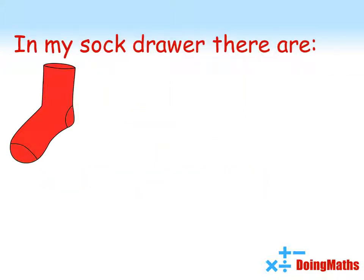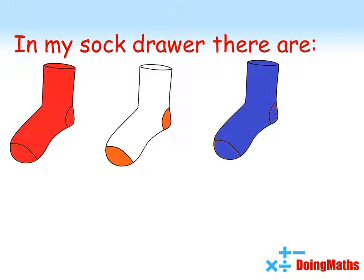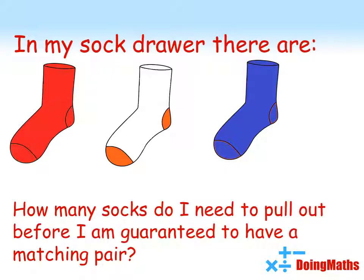But what about if I buy some more different coloured socks? So now there's some white socks in the drawer. Again, how many socks do I need to pull out before I am guaranteed to have a matching pair of socks?